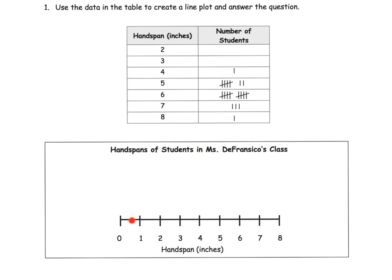The classic requirements for a line plot: you need a title, and oftentimes the title is related to the table. Here we have 'Hand Spans of Students,' so there's our connection. Every line plot also needs a legend or index down below saying what the numbers represent — in this case, hand span in inches. We could have just said 'inches'; we didn't have to use the words 'hand span.'